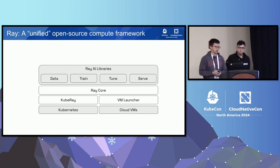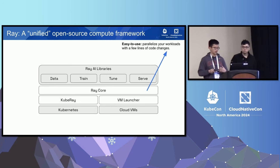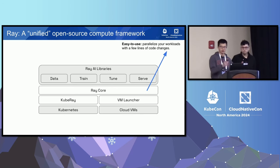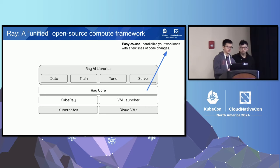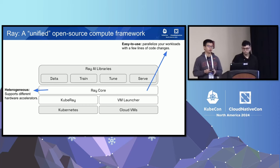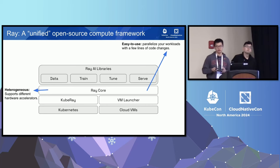Why is Ray so popular in ML infrastructure? First, the Ray core API is easy to use — a user can parallelize workloads with just a few lines of code. Compare that to MapReduce, where you need to rewrite programs in map and reduce functions, which is quite different from desktop programming. Second, Ray supports heterogeneous compute resources like GPUs from different vendors, TPUs, AWS Neuron chips, and Huawei NPUs — which has become increasingly important for training and batch inference.